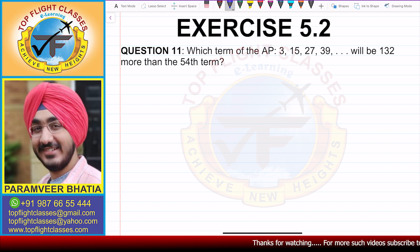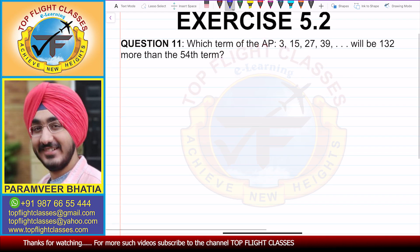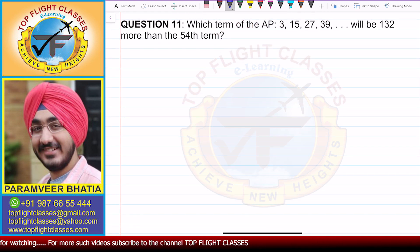Question number 11 says which term of the AP 3, 15, 27, 39 and so on will be 132 more than the 54th term. Now, there are two methods to do this. We will see both methods.